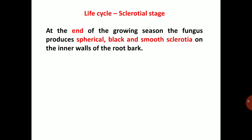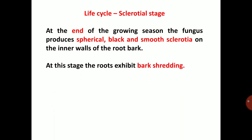In the sclerotial stage, at the end of the growing season, the fungus produces spherical, black, smooth sclerotia on the inner walls of the root bark. The pathogen continues to survive as the crop ends. Sclerotia are hard structures which tolerate unfavorable conditions. At this stage, the roots exhibit bark shredding.